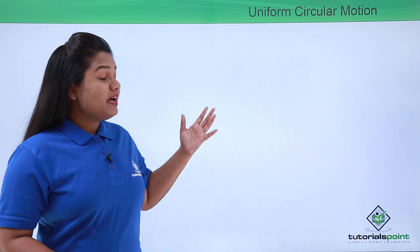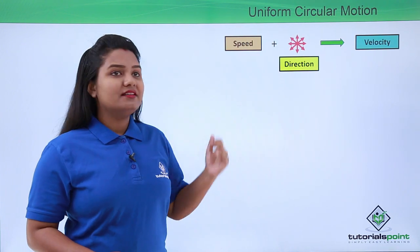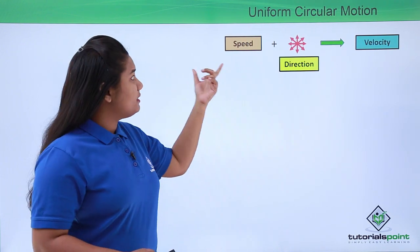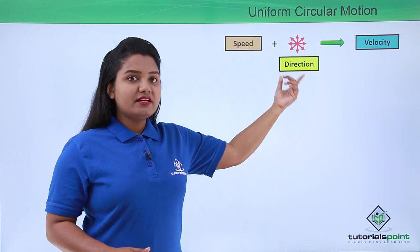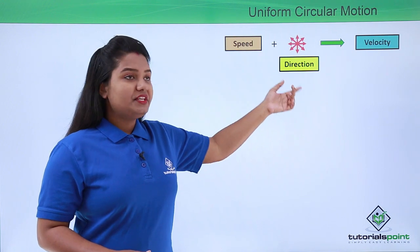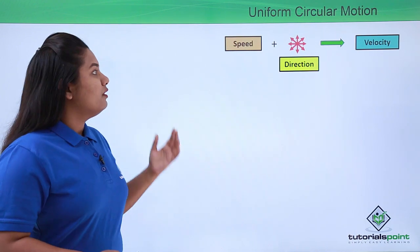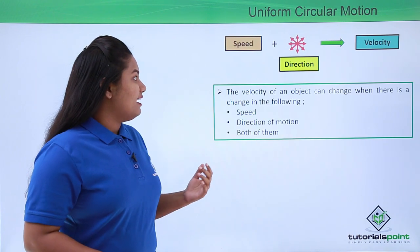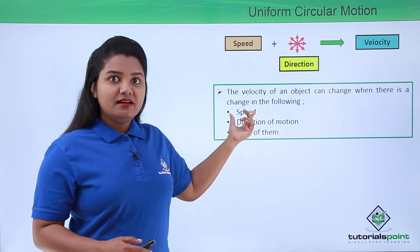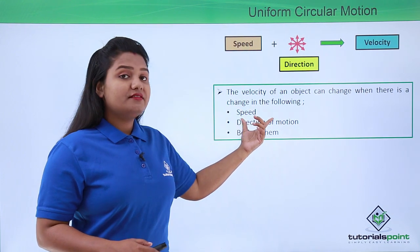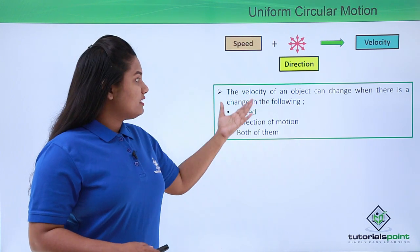We have learned that speed along with direction is said to be velocity. Speed is a scalar quantity — it represents magnitude — and along with direction it becomes velocity. Velocity can change in three cases: when the speed of the body changes, when the direction of motion changes, or when both change.